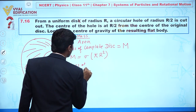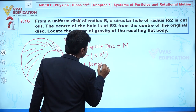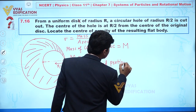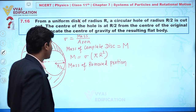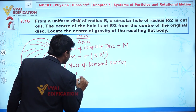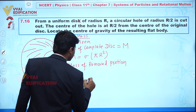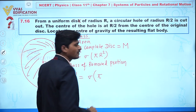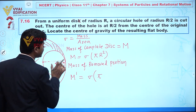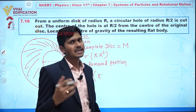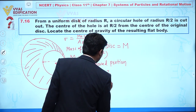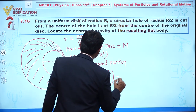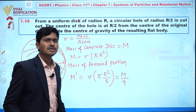Now, what is the mass of the removed portion? Let's call the mass of the removed portion m'. This equals sigma times pi times (R/2)², which gives sigma·π·R²/4. This can also be written as M/4. So the mass of the removed portion is M/4.